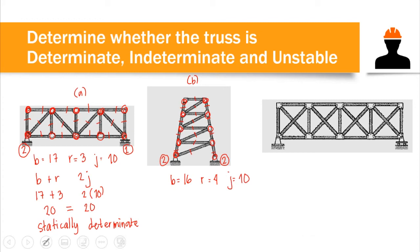So we have 16 plus 4 on the left side, and 2 times 10 on the right side. That gives us 20 on both sides. The left and right sides are equal, so this structure is also statically determinate.